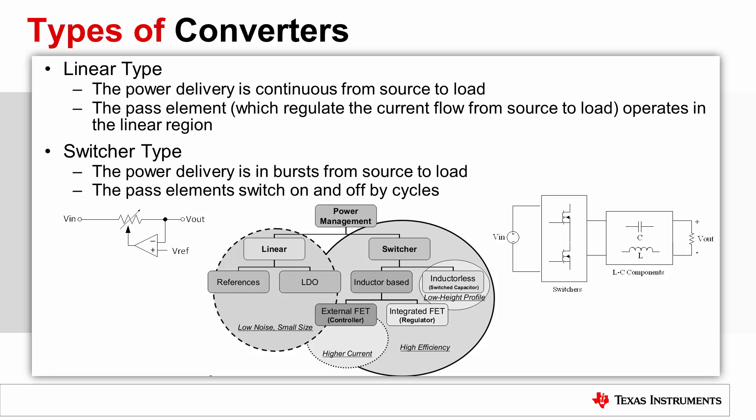A linear regulator is used to generate a regulated lower output voltage, similar to a buck switching converter. The figure below shows the simplified representation of the linear regulator as a variable resistor. Notice that the input is always connected to the output through the pass element. The pass element, which can be a transistor or MOSFET, operates in the linear region and regulates the current flow from source to load. A switching regulator is different from a linear regulator in that the switching converter delivers power to the load in bursts from the source.